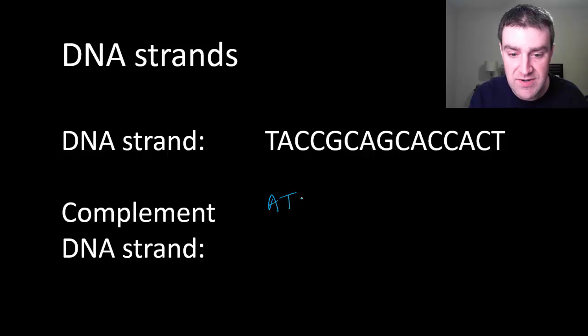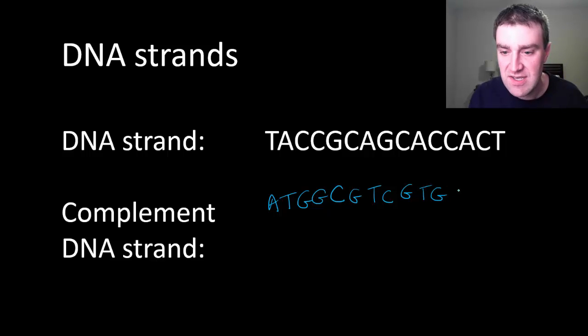A pairs with T, C pairs with G, which I'll do twice, G pairs with C, C pairs with G, and I can just keep going here to finish it. So if I know one side, I know what the other side is because there are very characteristic nitrogen bases that pair with each other.